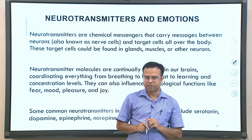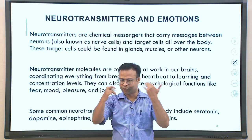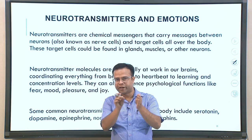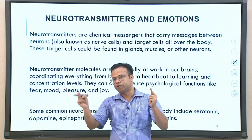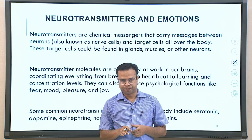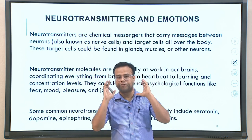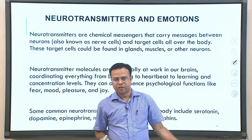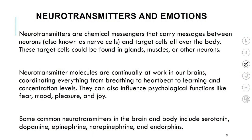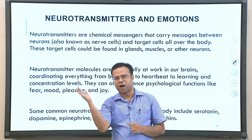Lastly, we will discuss neurotransmitters — chemical messengers released in the blood and between neurons, carrying messages from one neuron to another. They convey messages in nerve cells to target cells all over the body, including glands, muscles, and neurons. Neurotransmitters play a very important role; they are continually at work in our brains coordinating everything from breathing and heartbeat to learning and concentration. They can also influence psychological functions like fear, mood, pleasure, and joy. Some common neurotransmitters are serotonin, dopamine, epinephrine, norepinephrine, and endorphins.